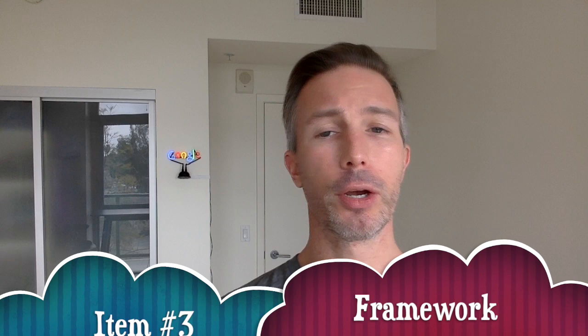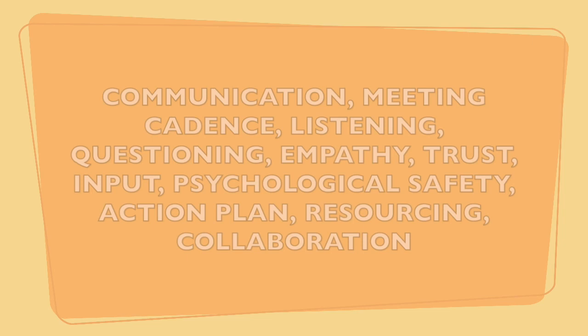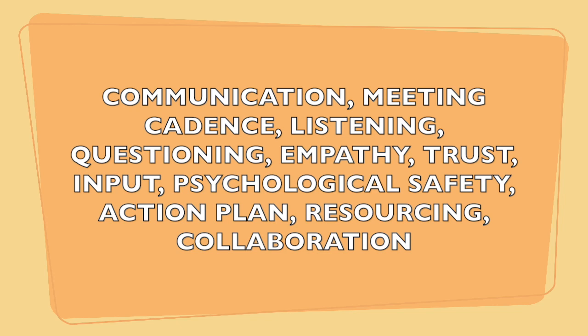Item three: the framework. Think of using a more collaborative framework — collaborative terms and concepts. A few to consider: overall communication, what does the meeting cadence look like, listening, questioning, empathy, trust, what input is coming in, creating psychological safety, thinking about an action plan, and how Bob is resourced. Those are some high-level concepts, but really focus on collaboration. You'll want to narrow it down when you answer the question.